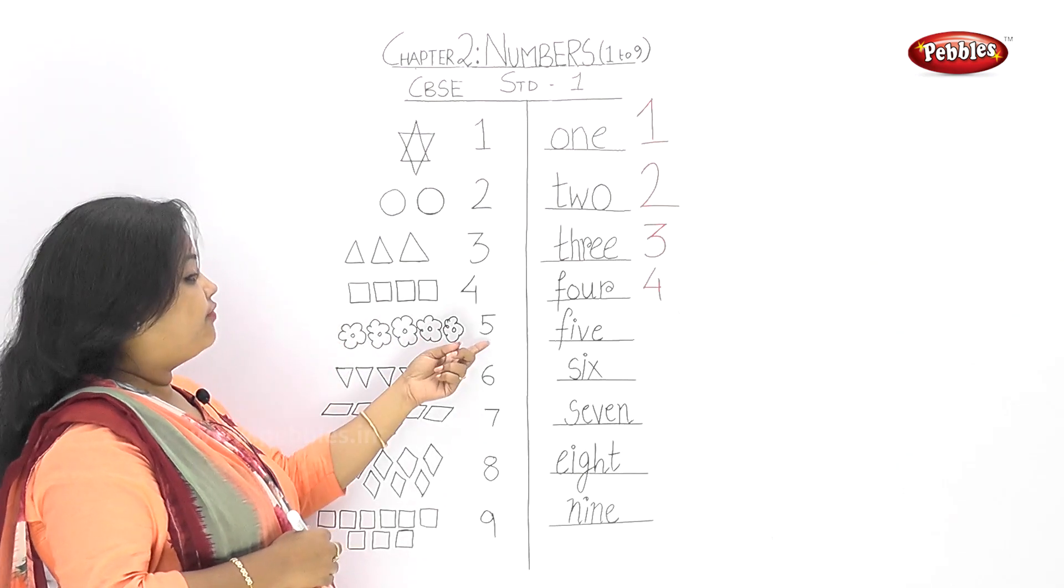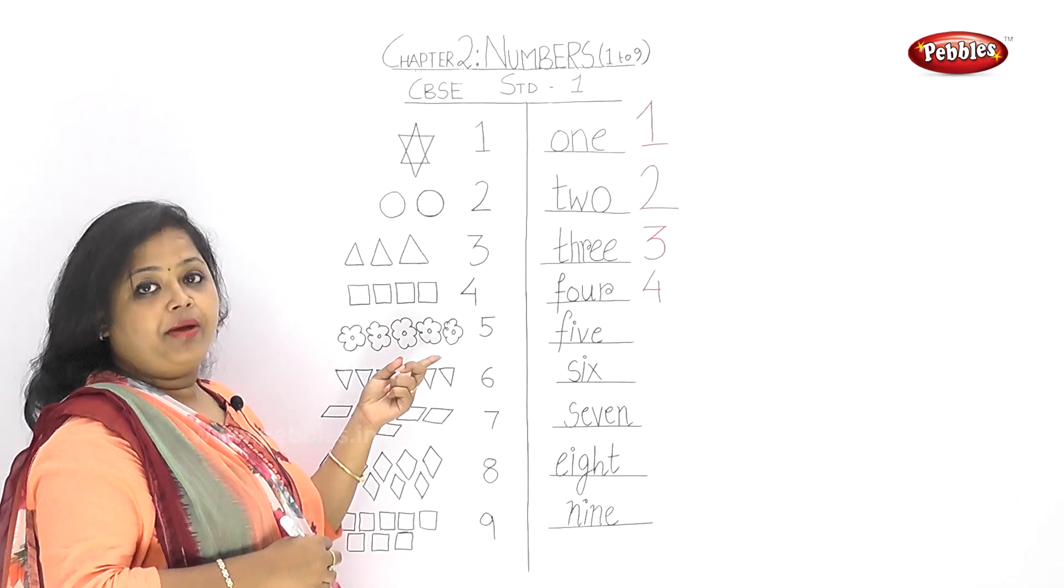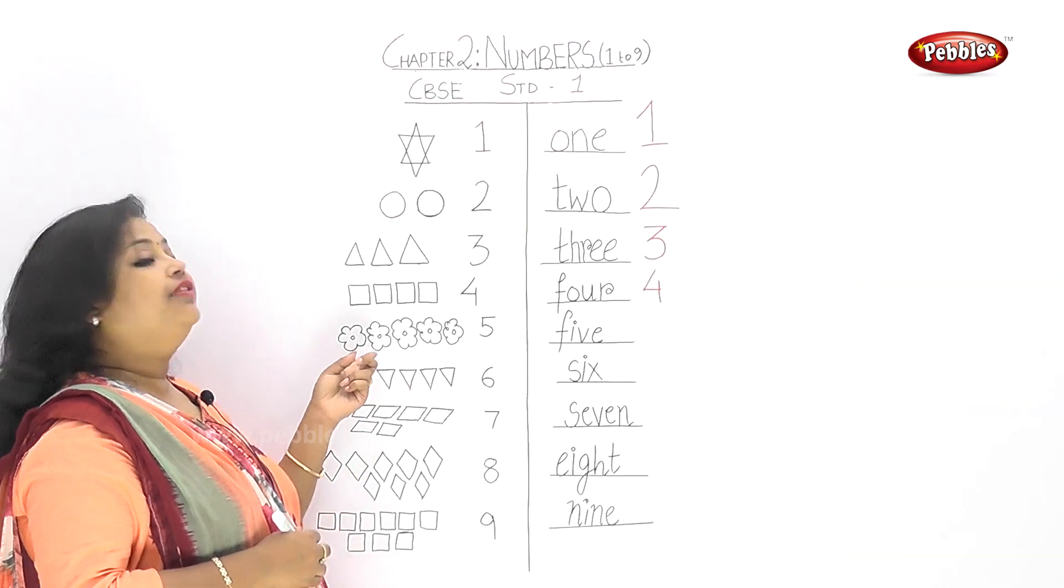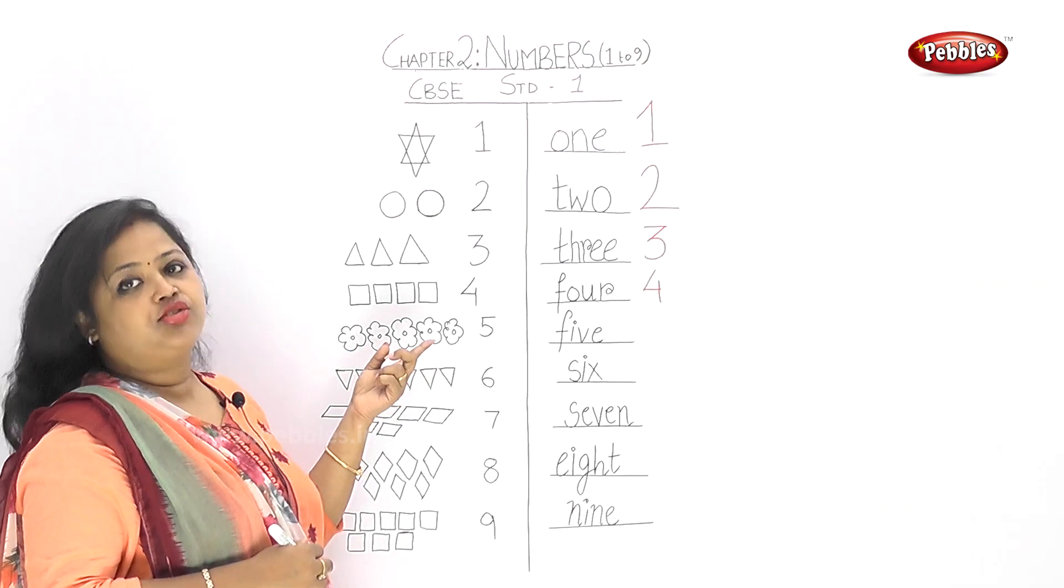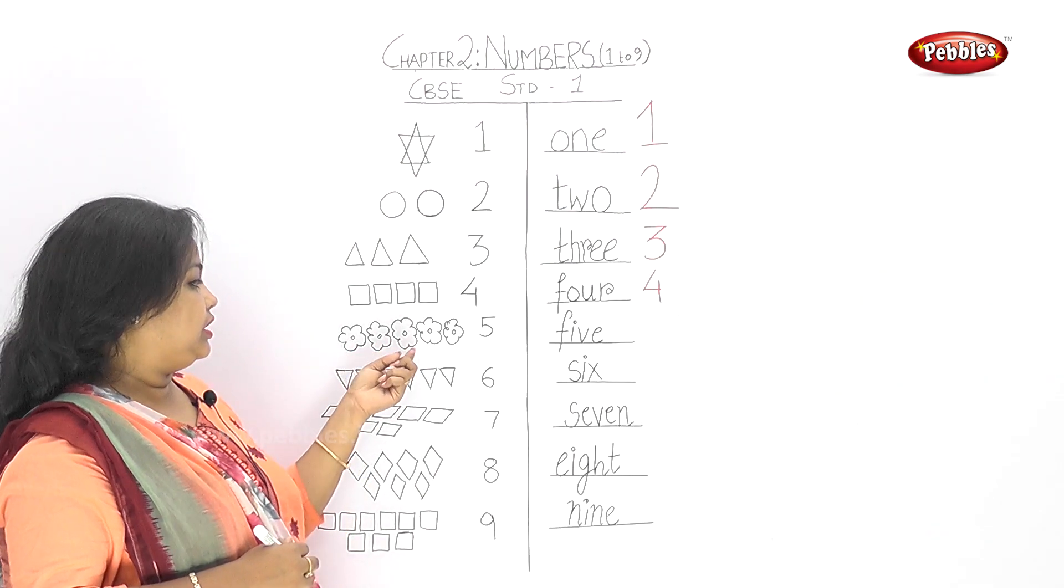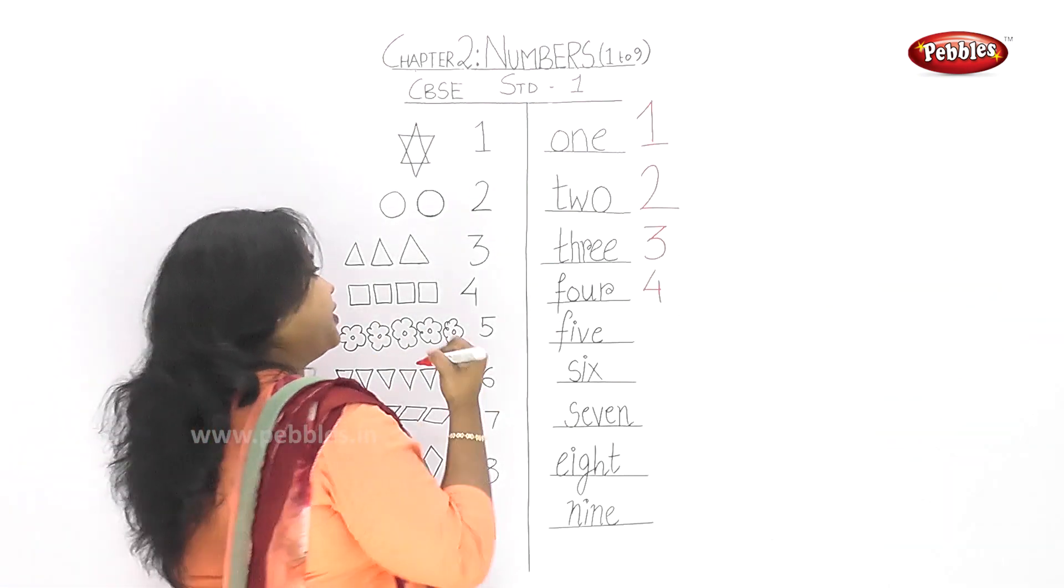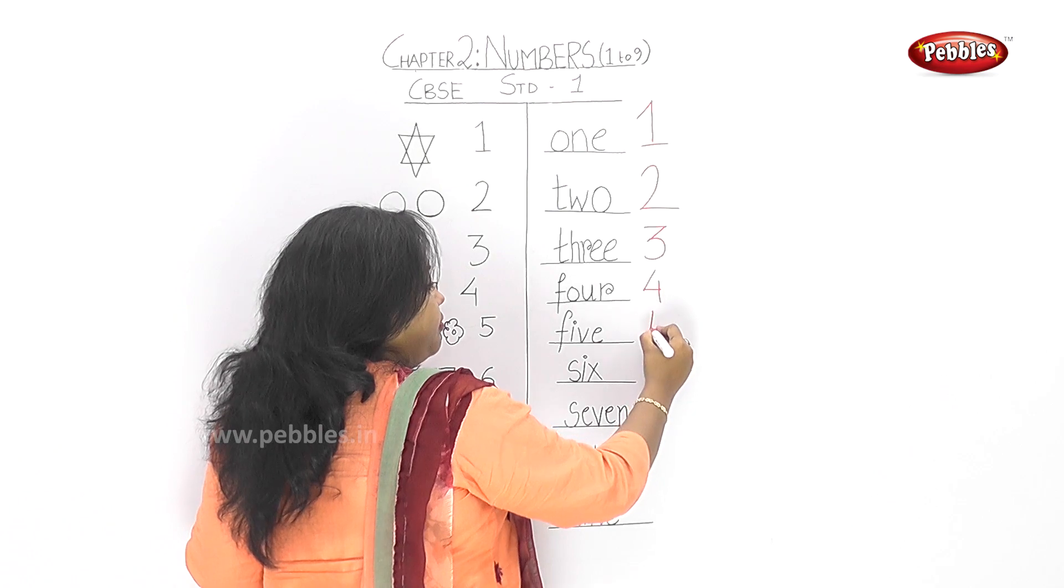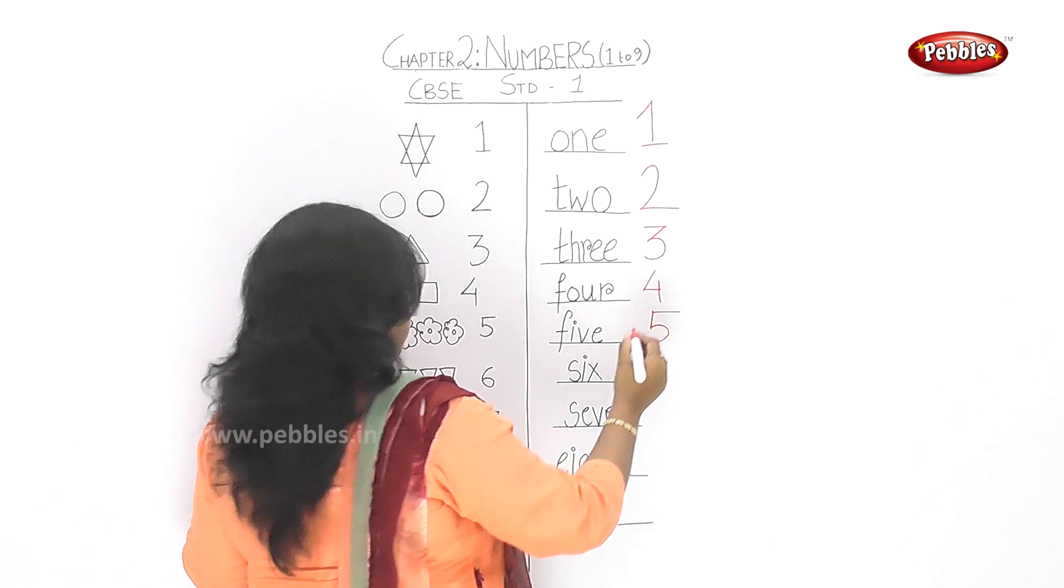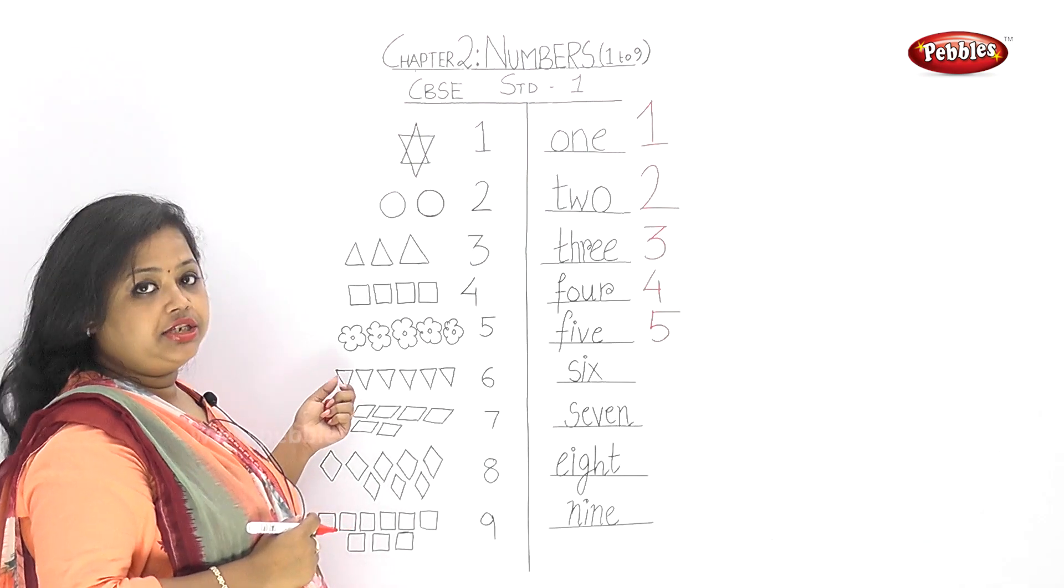Next we have five. Five, they are flowers. Flowers are everyone's favorite. How many flowers are here? Tell me. 1, 2, 3, 4, 5. Five. So how do we write five?